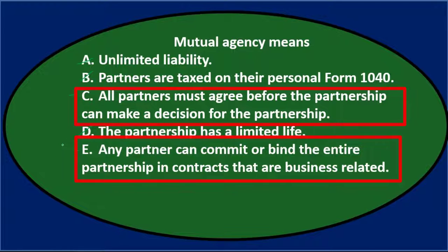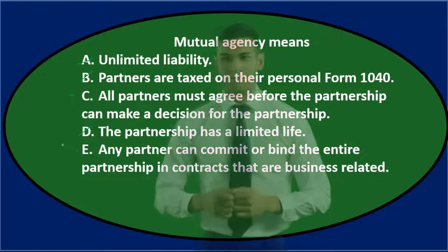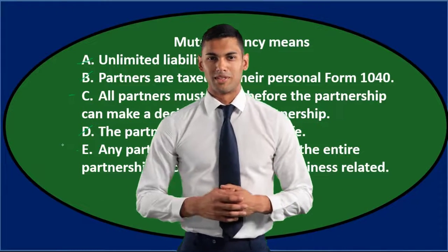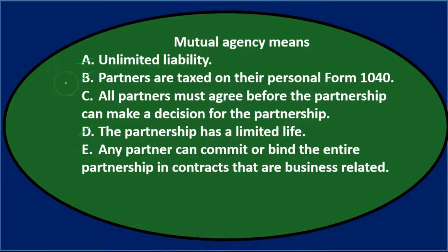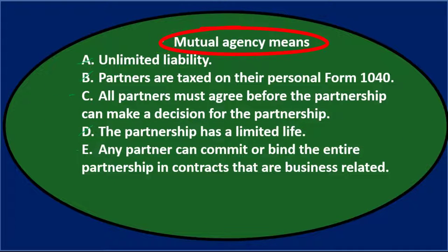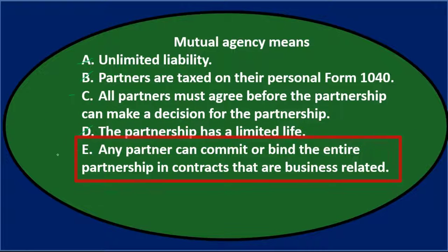We're left with C and E — the two more detailed answers. Sometimes with definition-type questions, the longer, more specific answer that seems to eliminate any untrue options is the right one. So: mutual agency means either C) all partners must agree before the partnership can make a decision, or E) any partner can commit or bind the entire partnership in contracts that are business related.